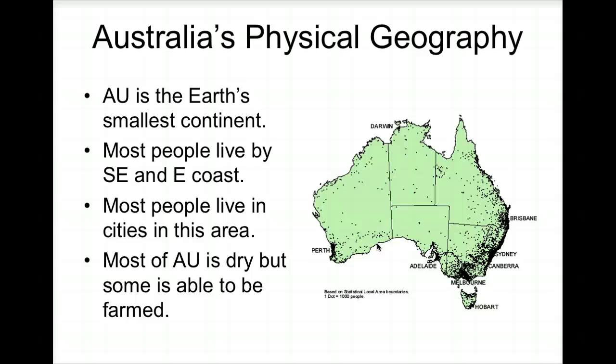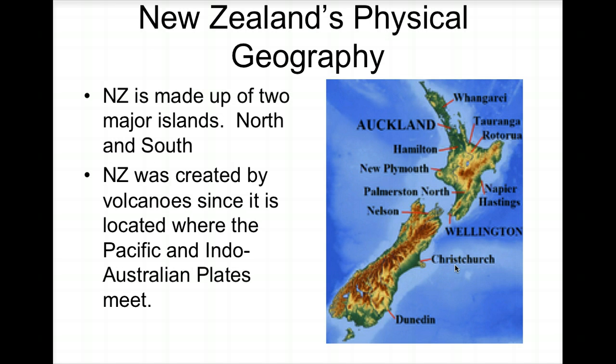Australia is the Earth's smallest continent. Most of the people live on the southeast and east coast — you can see this from a dot map where each dot represents a thousand people. Most of Australia is dry, but some regions in the southeast can be farmed. New Zealand is made up of two major islands — the North Island and the South Island — created from volcanoes where the Pacific and Indo-Australian plates meet.